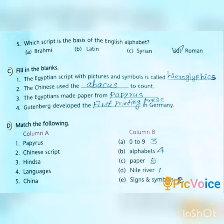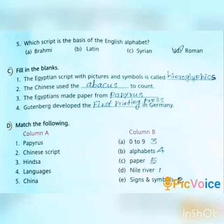Option D: Match the following. Column A to Column B. First: Papyrus — D. Nile River. Second: Chinese script — E. Signs and symbols. Third: Hindu — A. 0 to 9. Fourth: Languages — B. Alphabets. Fifth: China — C. Paper.